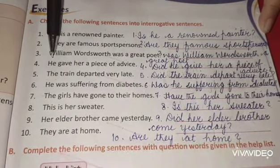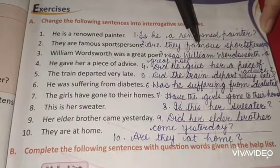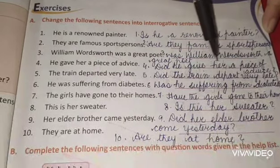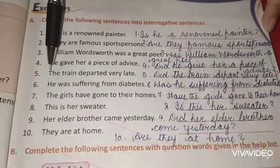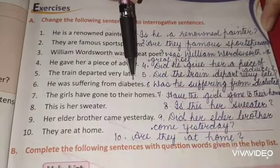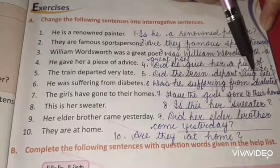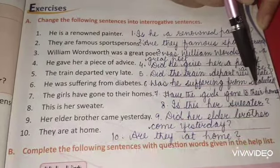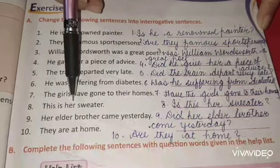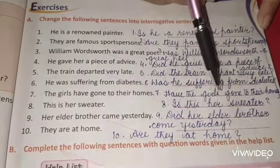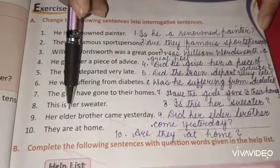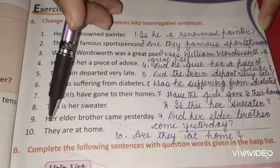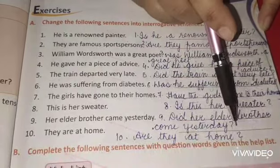Number 4: He gave her a piece of advice. → Did he give her a piece of advice? Number 5: The train departed very late. → Did the train depart very late? Number 6: He was suffering from diabetes. → Was he suffering from diabetes? Number 7: The girls have gone to their homes. → Have the girls gone to their homes? Number 8: This is her sweater. → Is this her sweater? Number 9: Her elder brother came yesterday. → Did her elder brother come yesterday? Number 10: They are at home. → Are they at home?